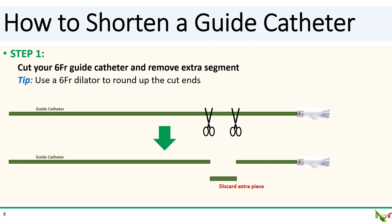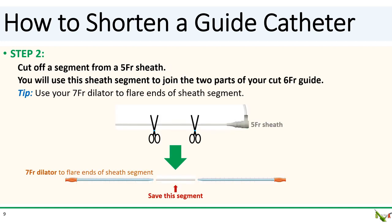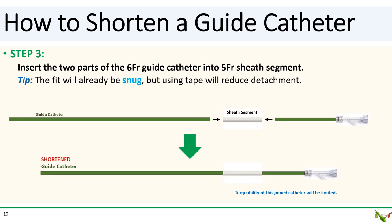In step one, cut your 6 French guide catheter and remove the extra segment. Use your 6 French dilator to round up the lumen at the cut ends of both parts. In step two, cut off a segment from the 5 French sheath — you'll need this sheath segment to join the two parts of the cut guide. Use the 7 French dilator to flare both ends of the 5 French sheath segment. In step three, insert the two parts of the cut 6 French guide catheter into the 5 French sheath segment. The fit will be quite snug, but torqueability will still be limited. Taping the segments together will improve torqueability and reduce the chance of catheter detachment during PCI.